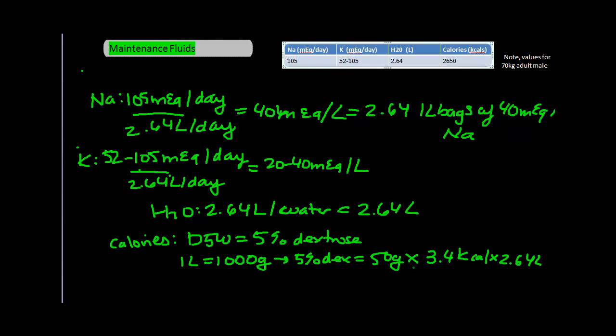And this gets you 448.8 kcal. That's how many kcal you're providing if you give D5 for the whole day. And if you divide that by your total caloric need, which is 2,650... sorry, I meant 448.8 divided by 2,640, and that would be 17%. So, that's how you get that value.